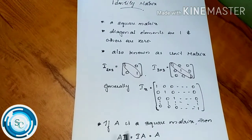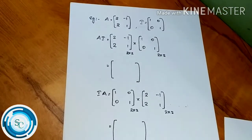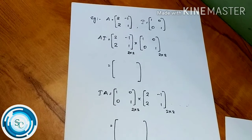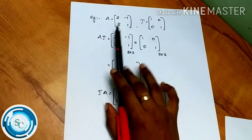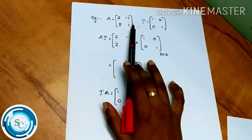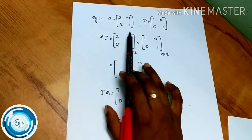Let's look at an example. Let A equal the 2×2 matrix: 2, -1, 2, 1.